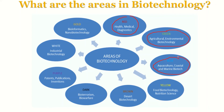We have blue biotechnology — our blue economy, the aquaculture, coastal, and marine biotechnology. We have yellow, which is food and nutrition biotechnology — making yogurt, wines, and all that. Then we have brown, which refers to desert biotechnology. Nations like Egypt that have a lot of desert have been able to use the desert to even grow crops. Then we have dark, which means bioterrorism and biowarfare — a form of biotechnology that can be used wrongly to destroy people through bio-weapons.